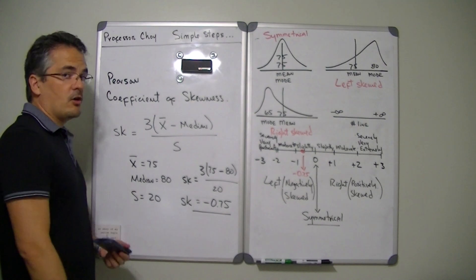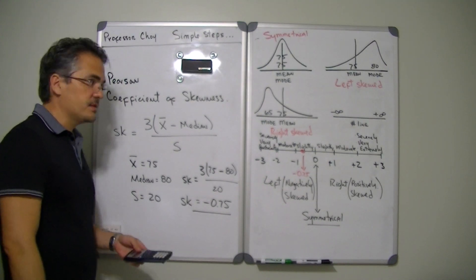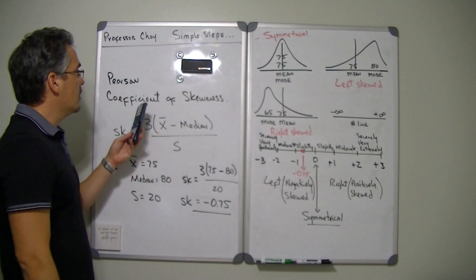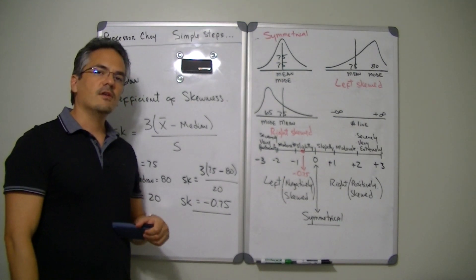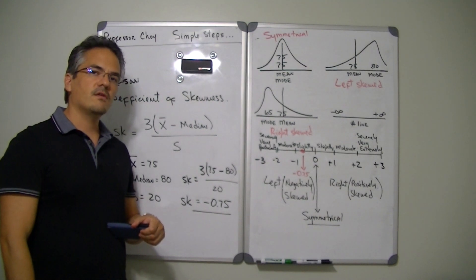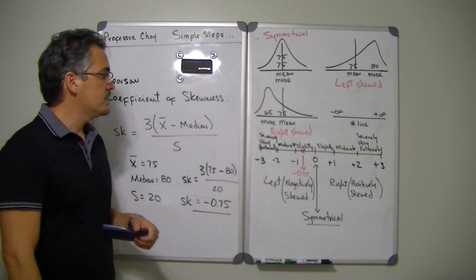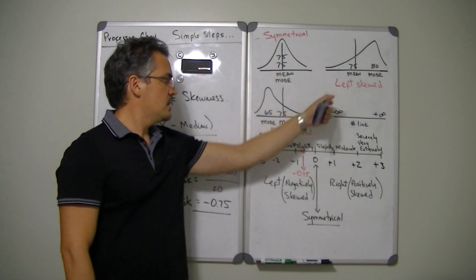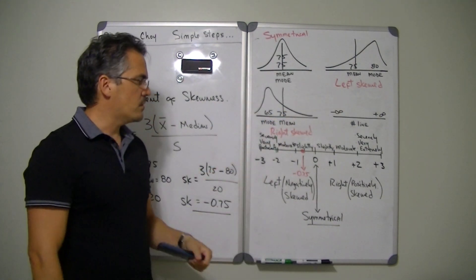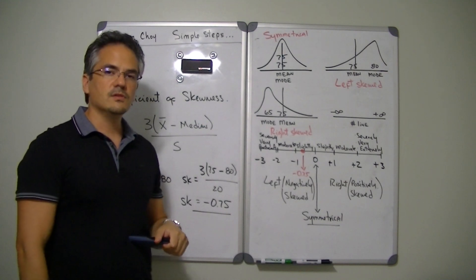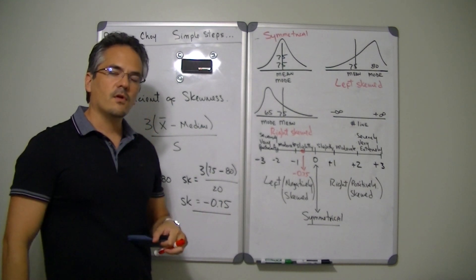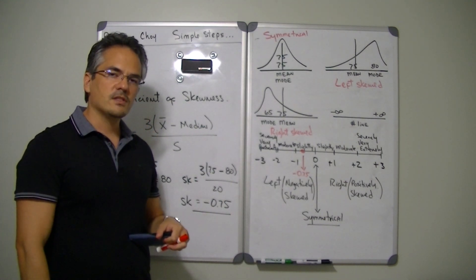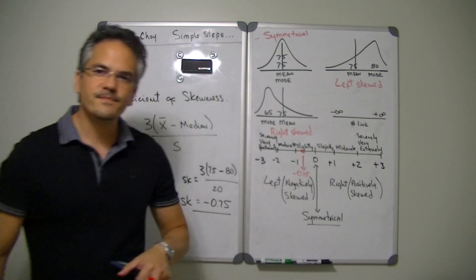I hope you liked our lesson for today, learning about the Pearson coefficient of skewness and how you can easily figure out whether data is symmetrical, left skewed, or right skewed by using the Pearson coefficient of skewness. Thank you for watching the videos from Professor Choi. Have a good one.